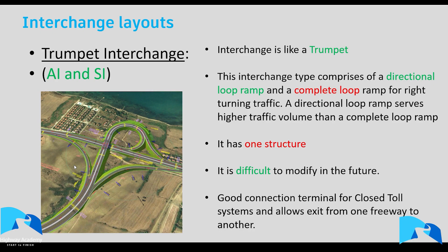The trumpet interchange looks like a trumpet. It comprises a directional ramp, a semi-directional ramp, and a complete loop, serving different levels of traffic. The semi-directional ramp serves a much higher level of traffic than a loop, and it has one structure. It is very hard to modify in the future. The trumpet is best suited for terminating one expressway into another.